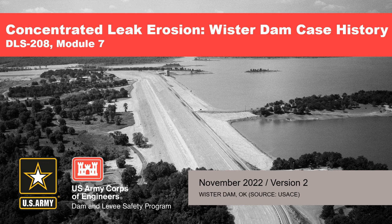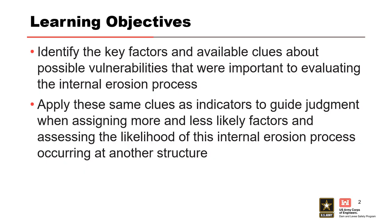This presentation is the Worcester Dam case history where concentrated leak erosion resulted in a dam safety incident. The objective is to identify the key factors and clues about possible vulnerabilities important to evaluating concentrated leak erosion. You can then apply these same clues as indicators to guide judgment when assigning more and less likely factors and assessing the likelihood of concentrated leak erosion at other structures.